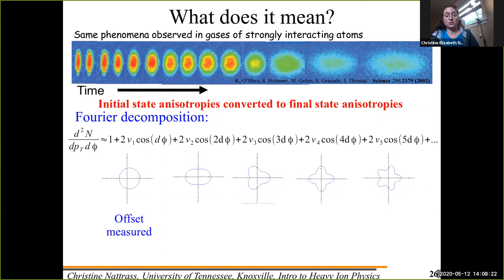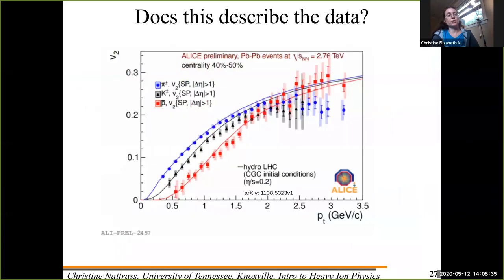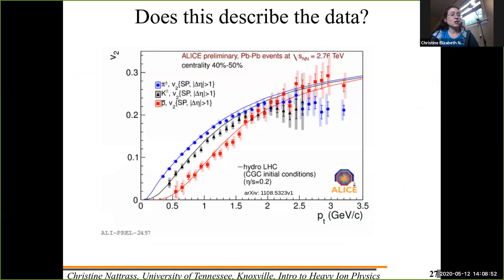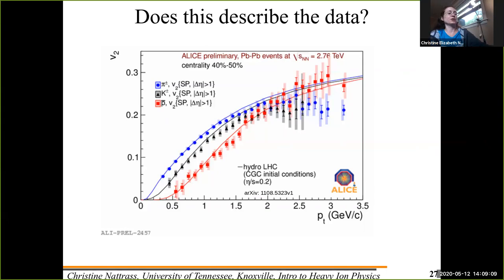The first coefficient is offset — this we've measured. You hear a lot about V2. The first one is called directed flow; you hear the whole thing called collective flow. Because you have a pressure gradient, to a good approximation the particles are experiencing the same force but have different masses. So this anisotropy — this V2 — is greater for larger particles and smaller for heavier particles. Protons are heavier than pions, and kaons are in between. So V2 is smaller for protons, and as mass decreases, V2 increases.